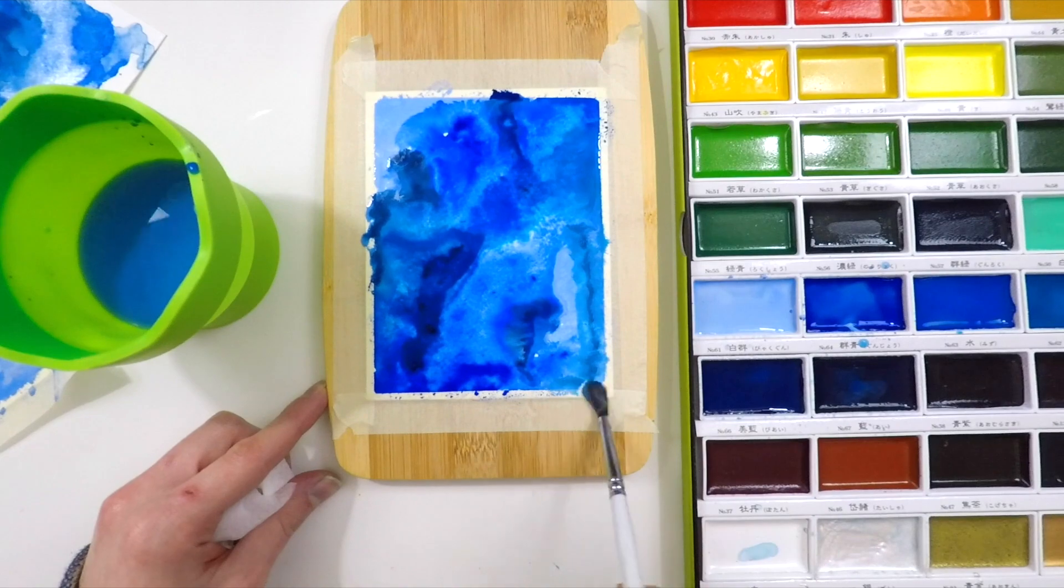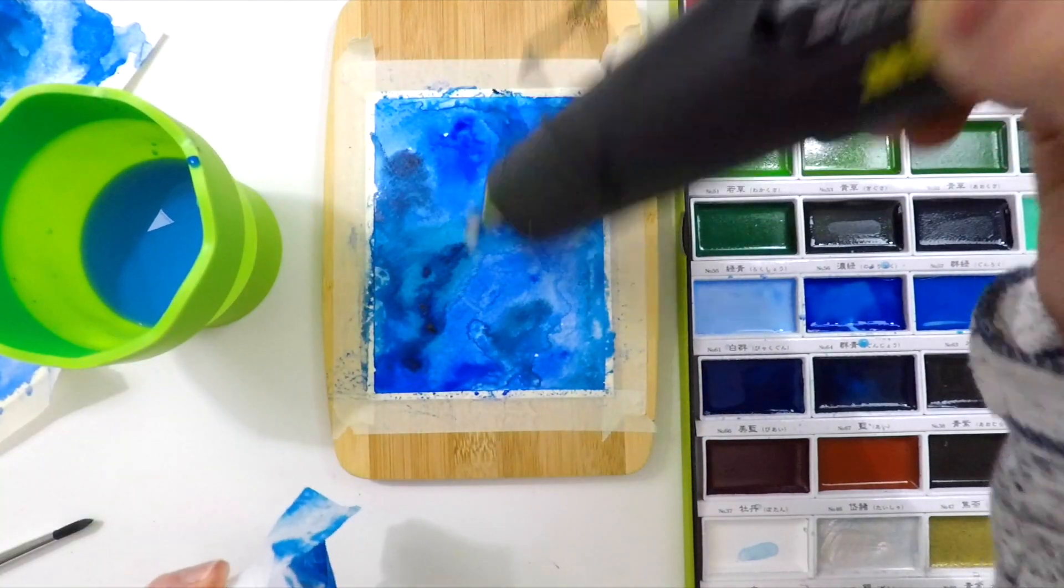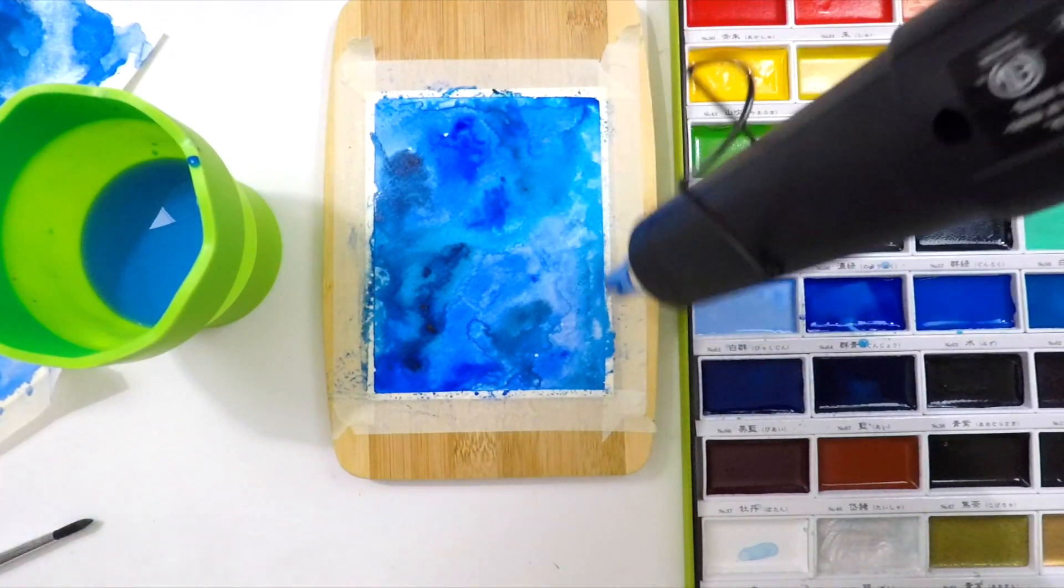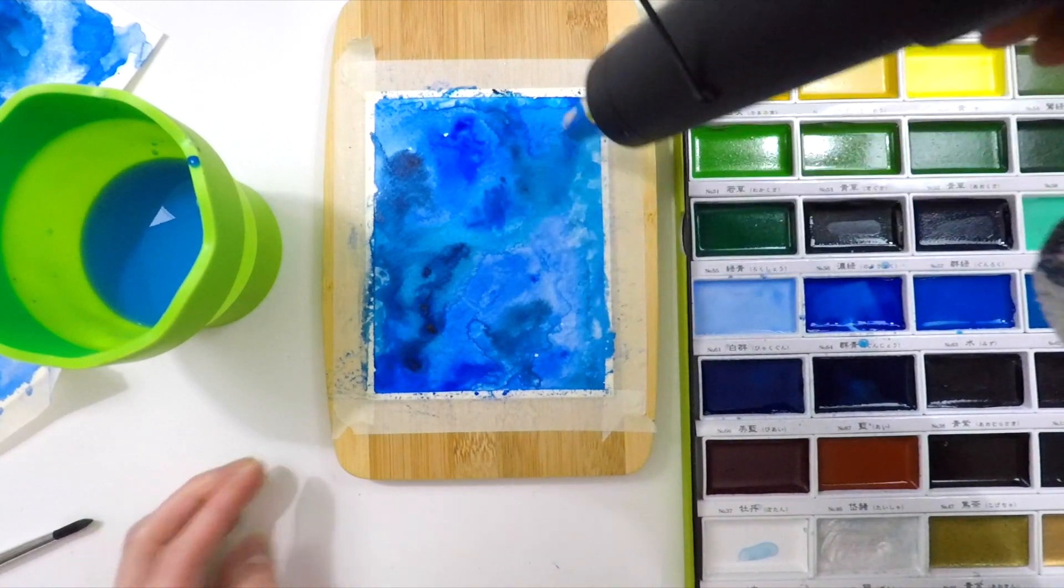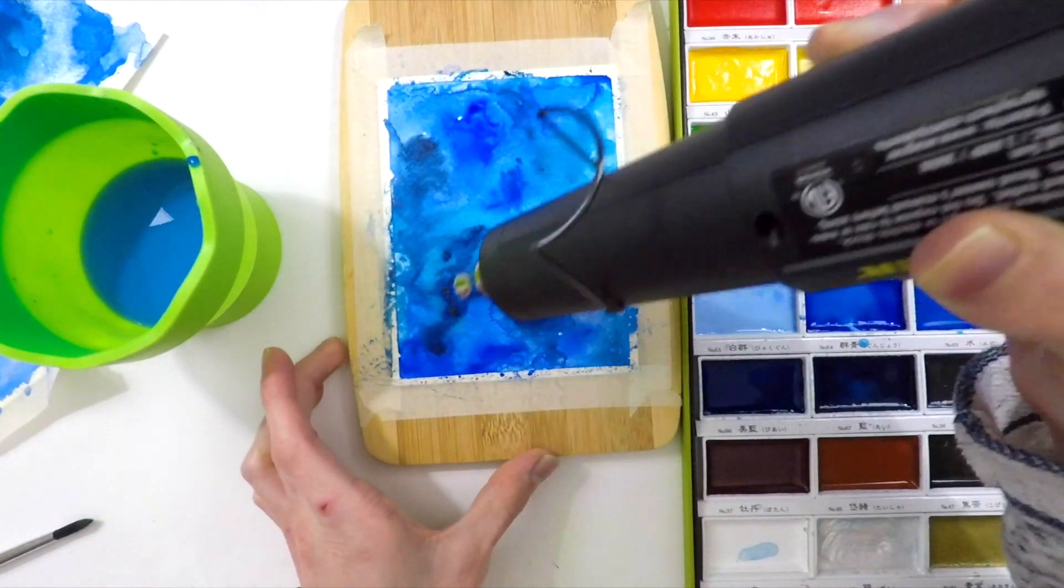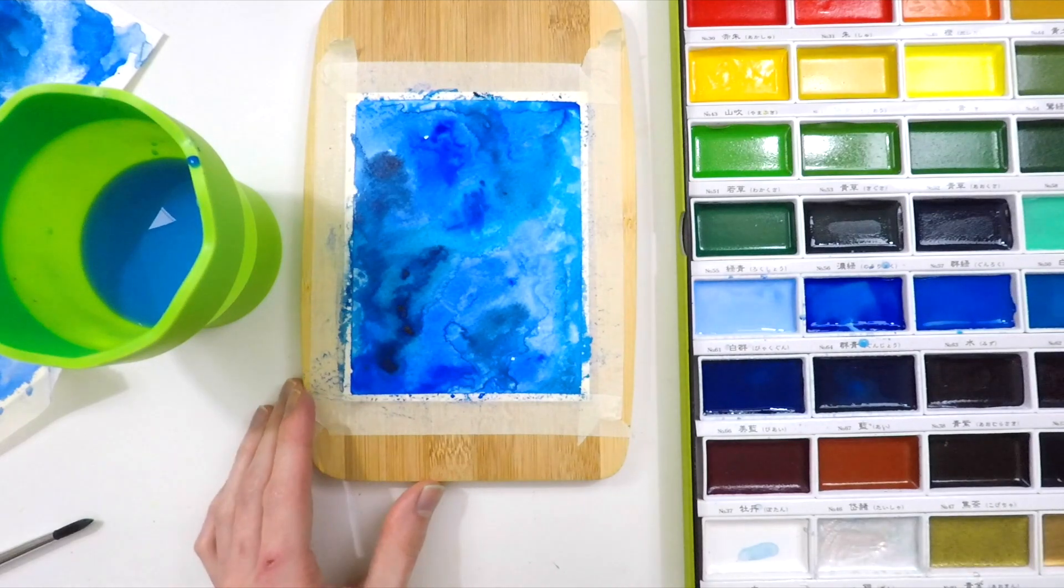I used the same exact colors for each panel, just dropping color in, swirling it around, creating different textures. I'm going to dry in between each layer because I want the hard lines from the watercolor drying. I think it looks cool.